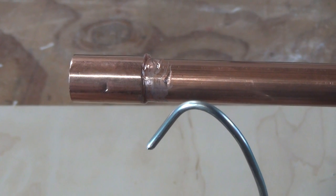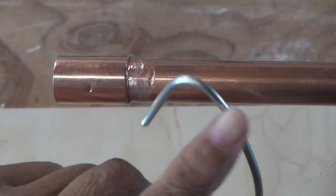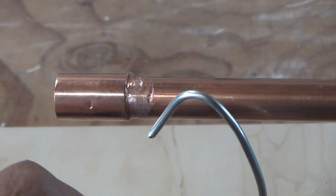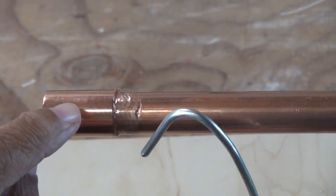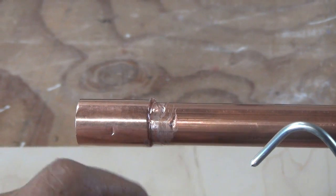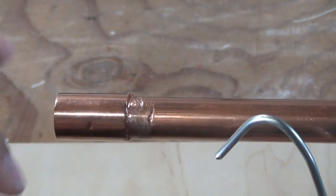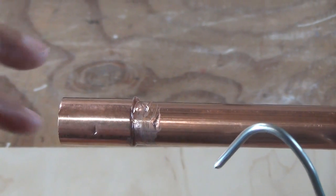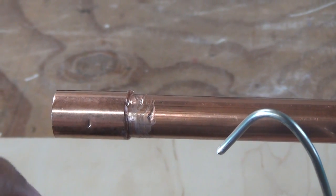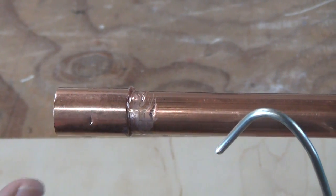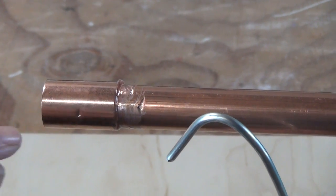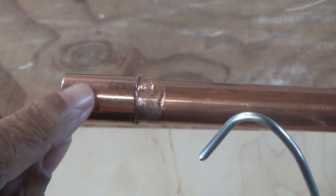Capillary action is the ability of a liquid, in this case the melted solder, to flow into a narrow space, the narrow space being the gap between this fitting and our pipe. It gets sucked in without any assistance or opposition from any kind of external force, like gravity, for example. It occurs because of intermolecular forces between the liquid, the solder, the melted solder, and the surrounding solid surface, our copper.